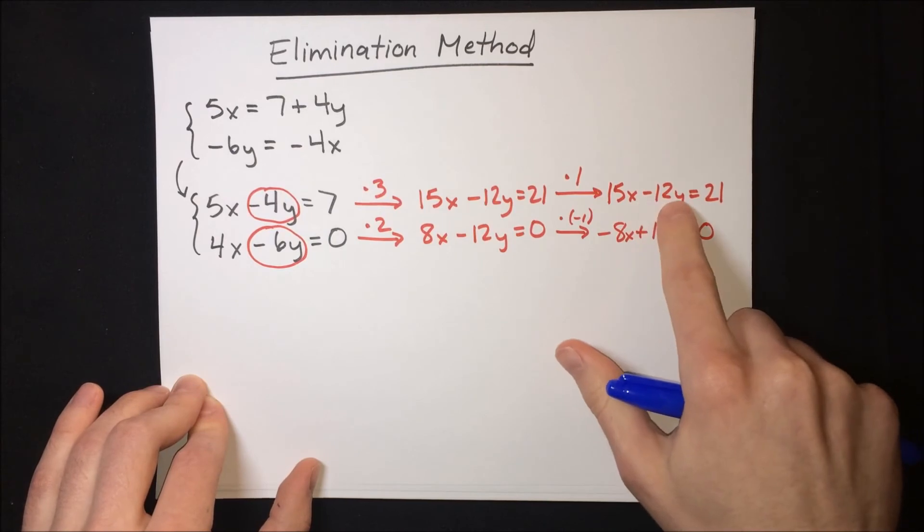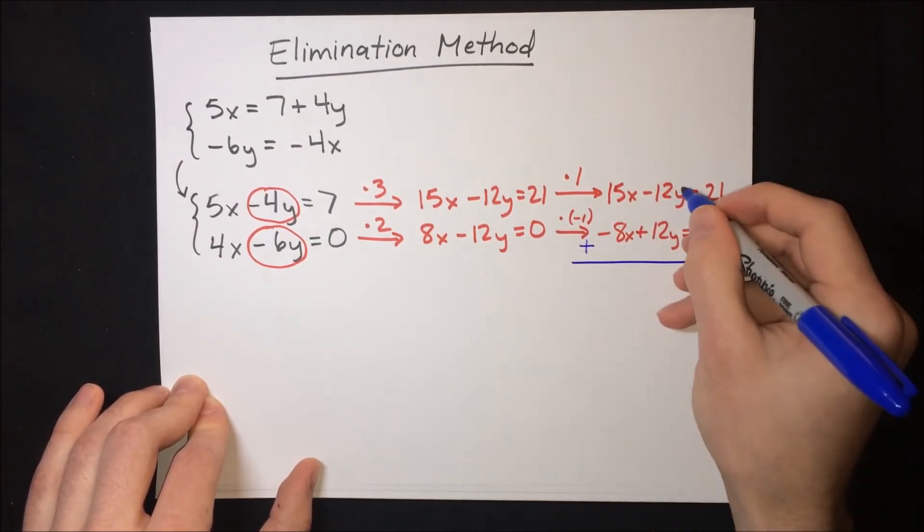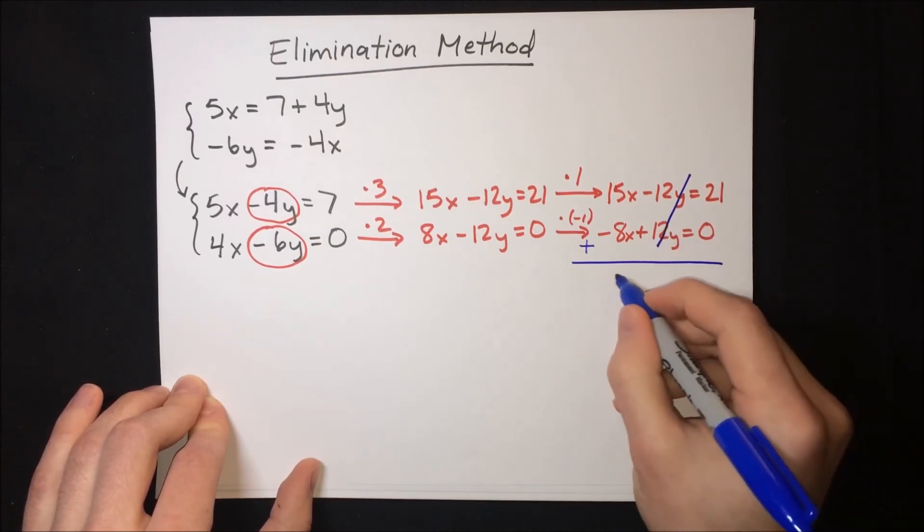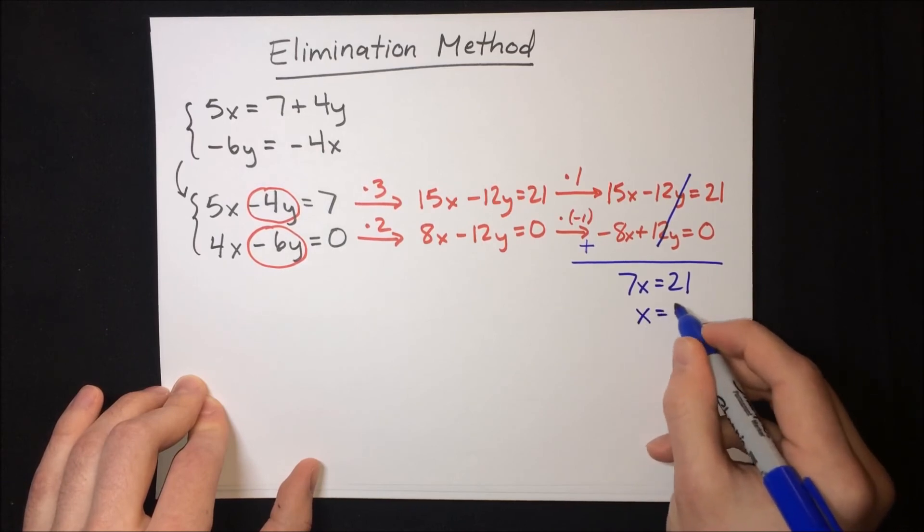Perfect. Now we have our negative 12y and a positive 12y. And when we add, those will cancel. We'll eliminate y and we'll just have 7x equals 21. So x equals 3.